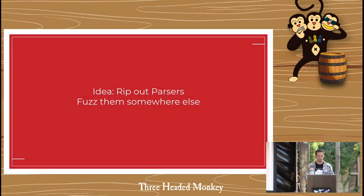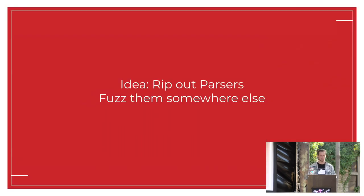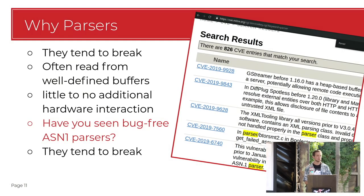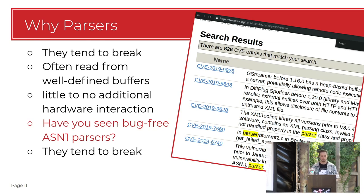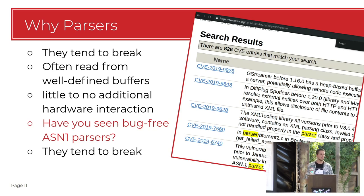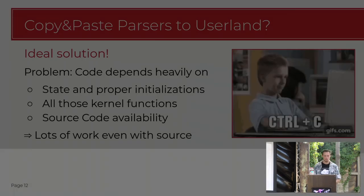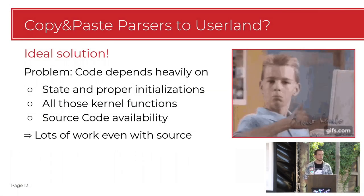I had this idea: let's rip out parsers from the kernel and fuzz them anywhere else. Why parsers? Parsers are the main things - they take something, interpret it, and output something, and that is really hard to do right. That stuff breaks all the time. I have not yet seen a bug-free ASN.1 parser, for example. And parsers almost never interact with anything apart from their little buffer they operate on, so it's really easy to fuzz - we don't have any hardware to interact with. So just copy-paste the whole parser to user space and fuzz it there.